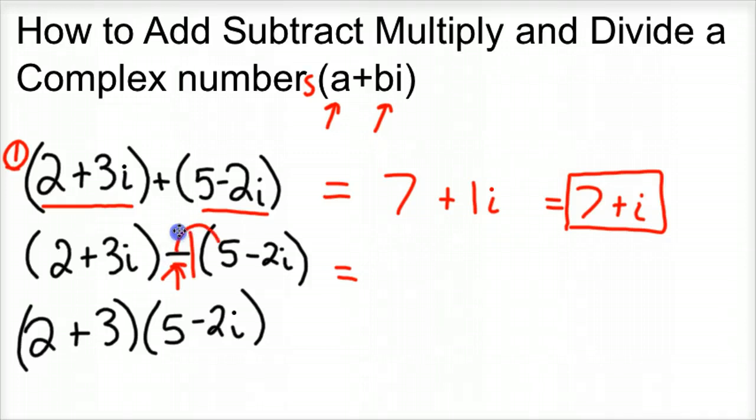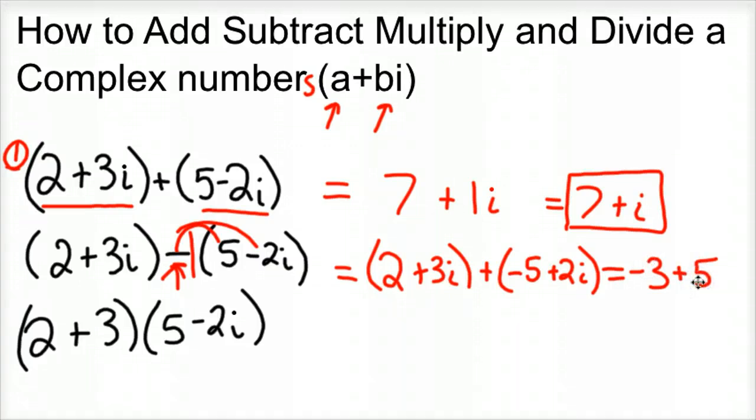So you're going to distribute the negative 1 through the equation. So you would have 2 plus 3i. You know, it's just like any math. You change subtraction to addition and change the sign to the right. Well, when you do that, you'd have negative 5 plus 2i. And now you can go ahead and do it like we did number 1. So 2 minus 5 is negative 3. 3i plus 2i is 5i. So if you were to subtract those two complex numbers, that is what you'd get.